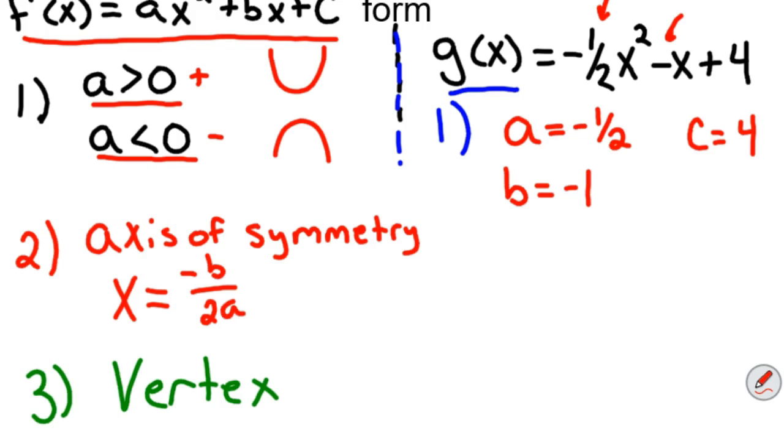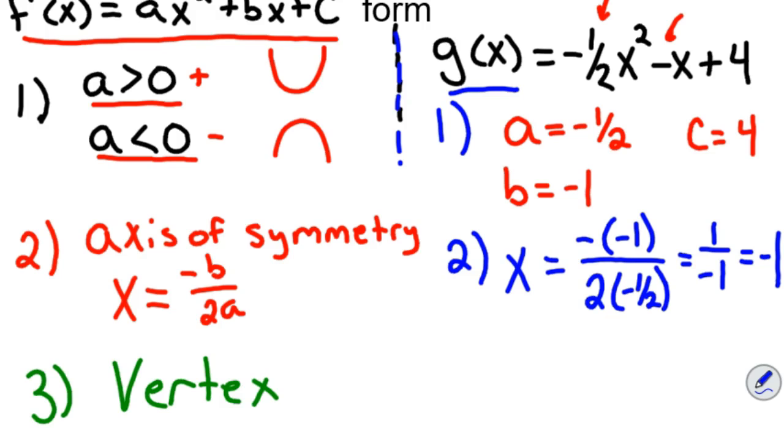So in our case, and I'll do it, let's do it in blue over here. So in our case x equals negative negative one over two times negative one-half because that's our a. Well if you simplify all that, negative negative is positive one, you have basically one over negative one because two times negative a half is negative one. So we're looking at negative one as my axis of symmetry. So x equals negative one.